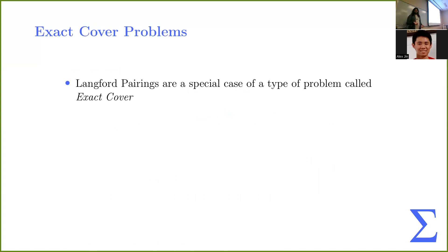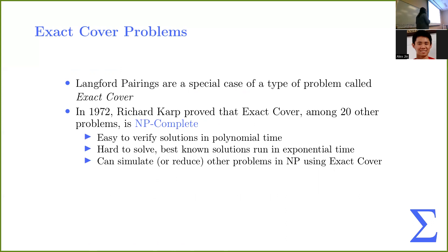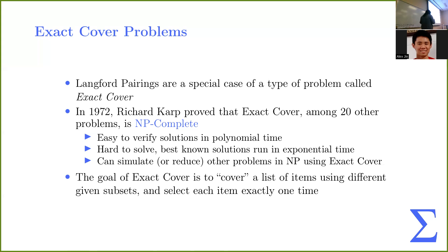So, Langford pairings are a special case of a problem called exact cover. So, in 1972, Richard Karp proved that exact cover problems are what we call NP-complete. So, what does this mean at a high level? So, we can verify solutions in polynomial time. These problems are hard to solve, even though they're easy to verify. And it's one of these problems where if we have a fast algorithm to solve exact cover, we can turn it into a fast algorithm to solve other hard problems, such as Boolean satisfiability, or maybe Hamiltonian path, or some other problems you guys may have heard of in your classes.